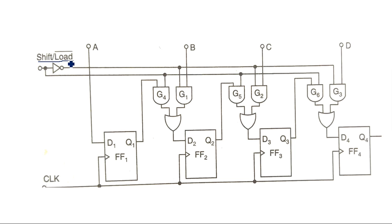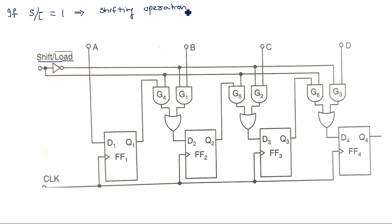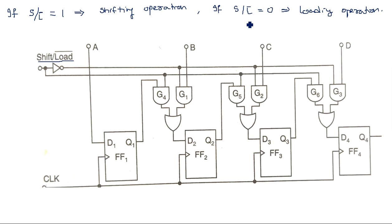The pin is called shift-and-load-bar. If the shift-and-load-bar pin is equal to 1, that means the shifting operation is performed. If shift-and-load-bar is equal to 0 — meaning shift=0 and load-bar=0 — then the loading operation is performed.